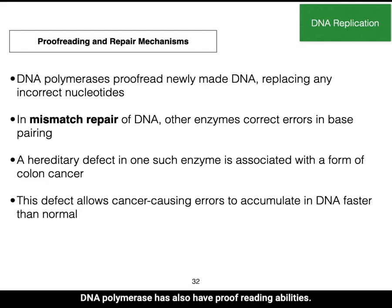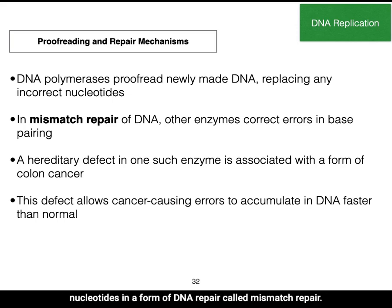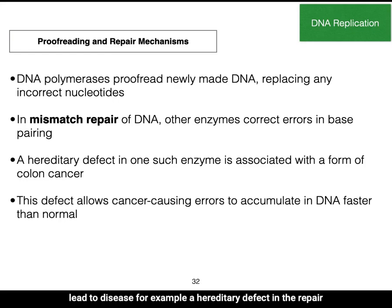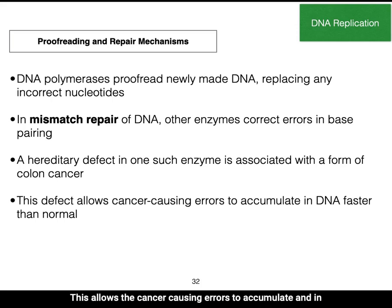DNA polymerases also have proofreading abilities — they proofread the newly made DNA and replace any incorrect nucleotides. In a form of DNA repair called mismatch repair, the DNA repairs itself by looking for mismatched base pairs. This is important because alterations in DNA could lead to disease. For example, a hereditary defect in the repair mechanism is associated with a form of colon cancer, allowing cancer-causing errors to accumulate in DNA much faster than normal.